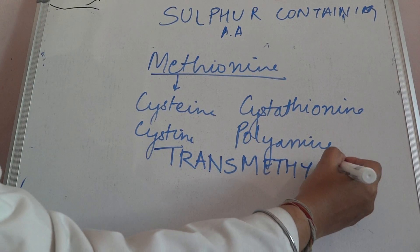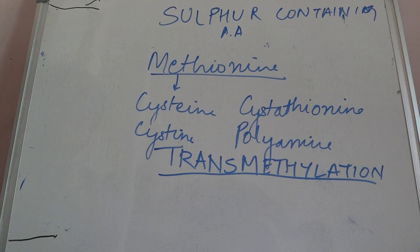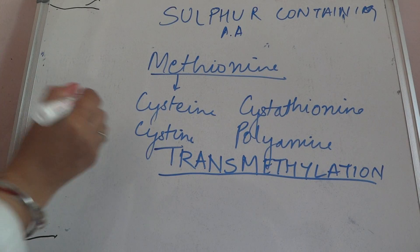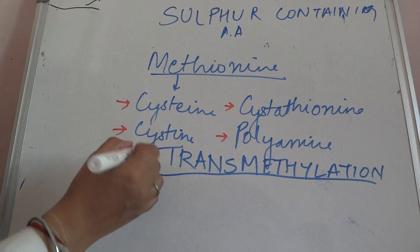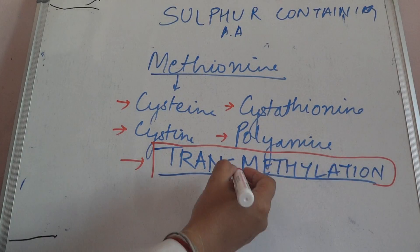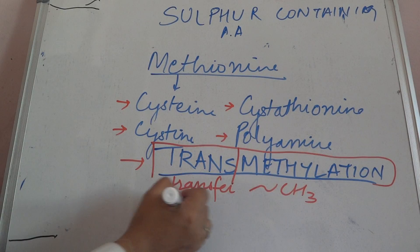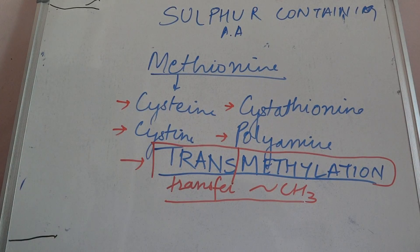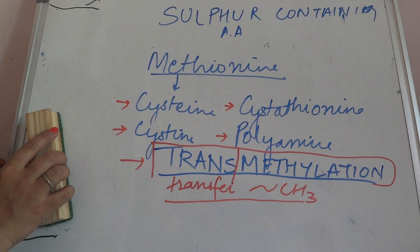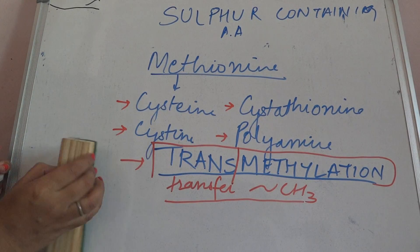These are the important functions of methionine: it is helpful in the synthesis of cysteine, cystine, cystathionine, polyamines, and it is most important in transmethylation. Transmethylation means transfer of methyl group. Whichever substrate requires the methyl group, methionine will transfer the methyl group to that substance.